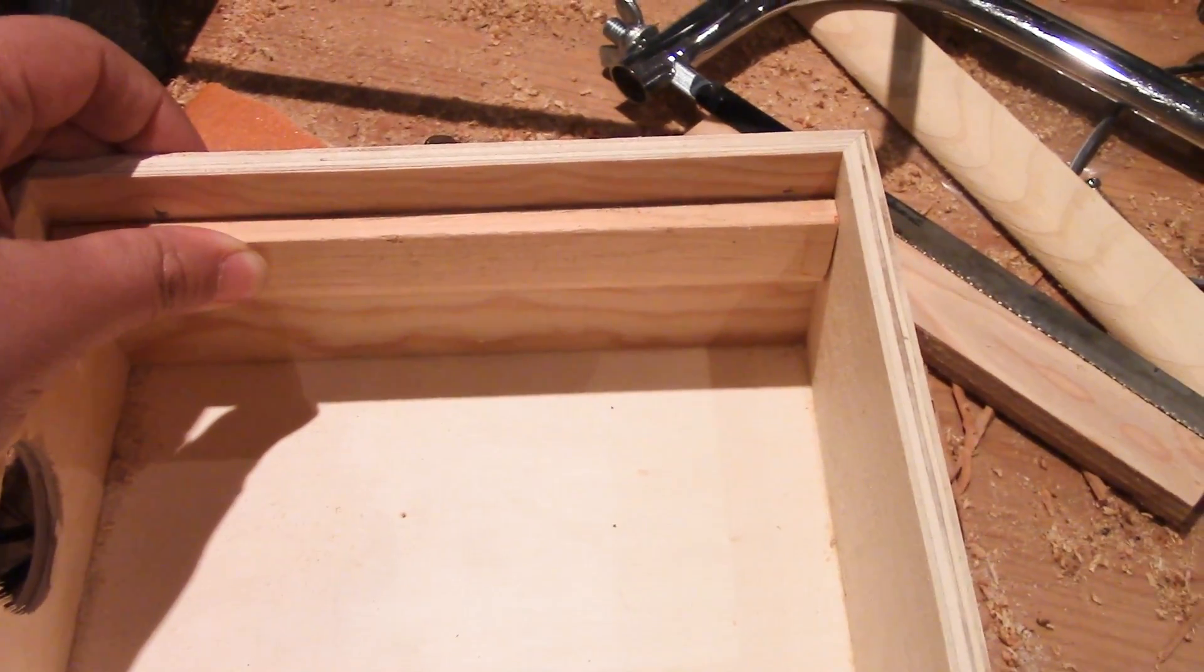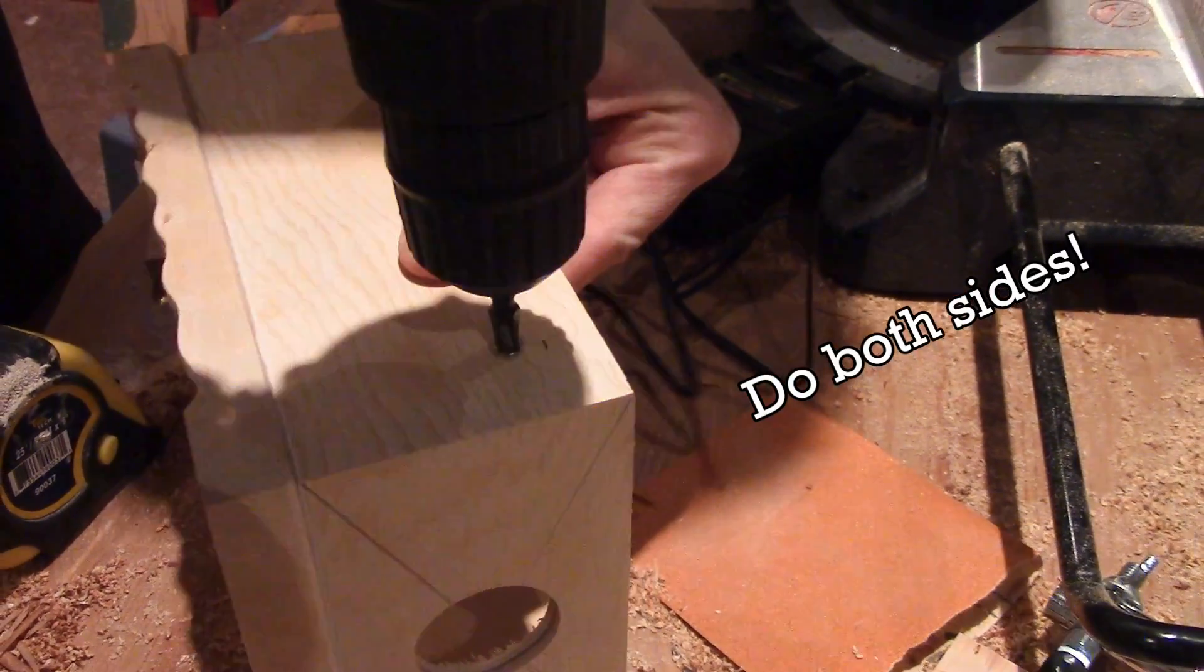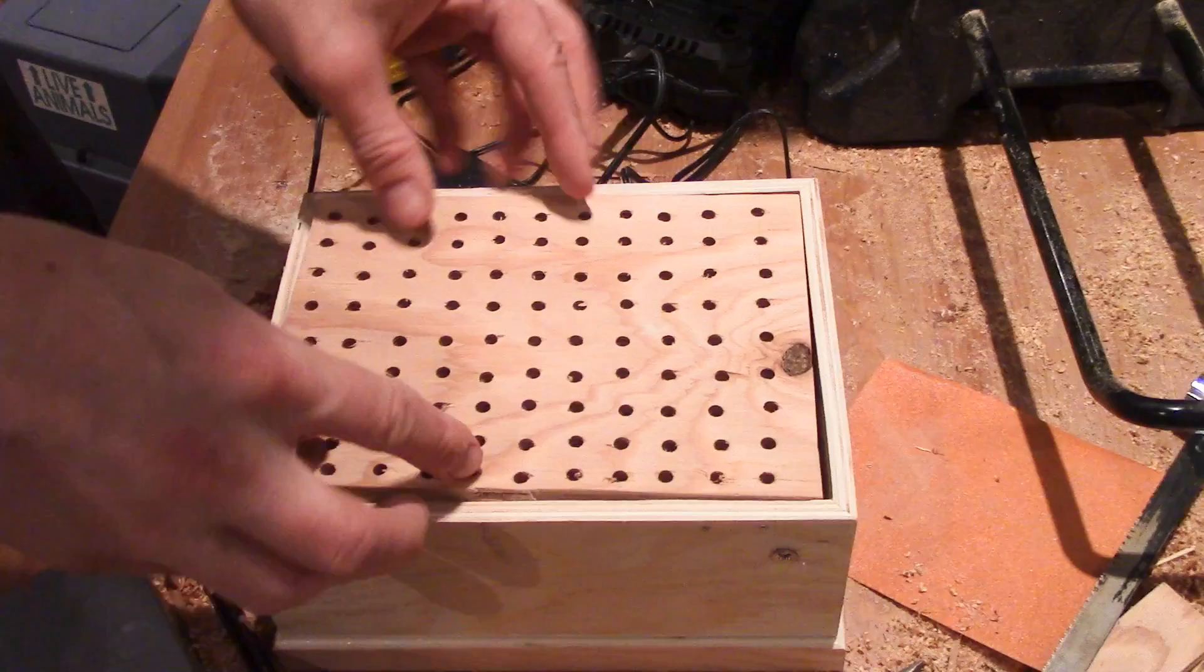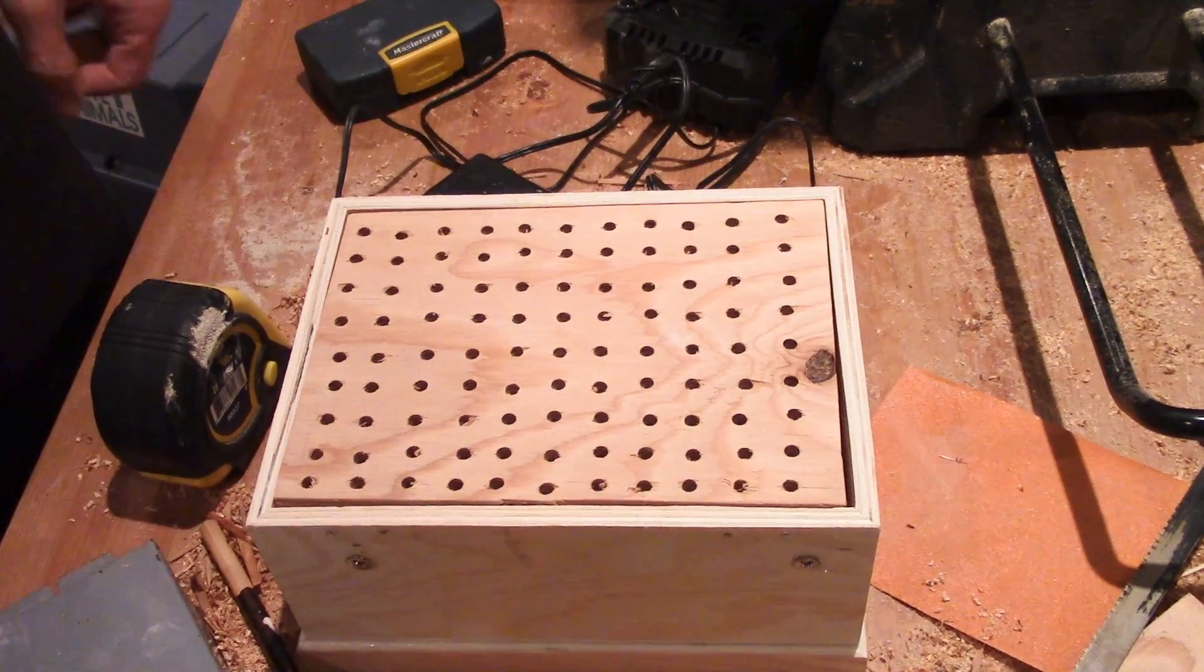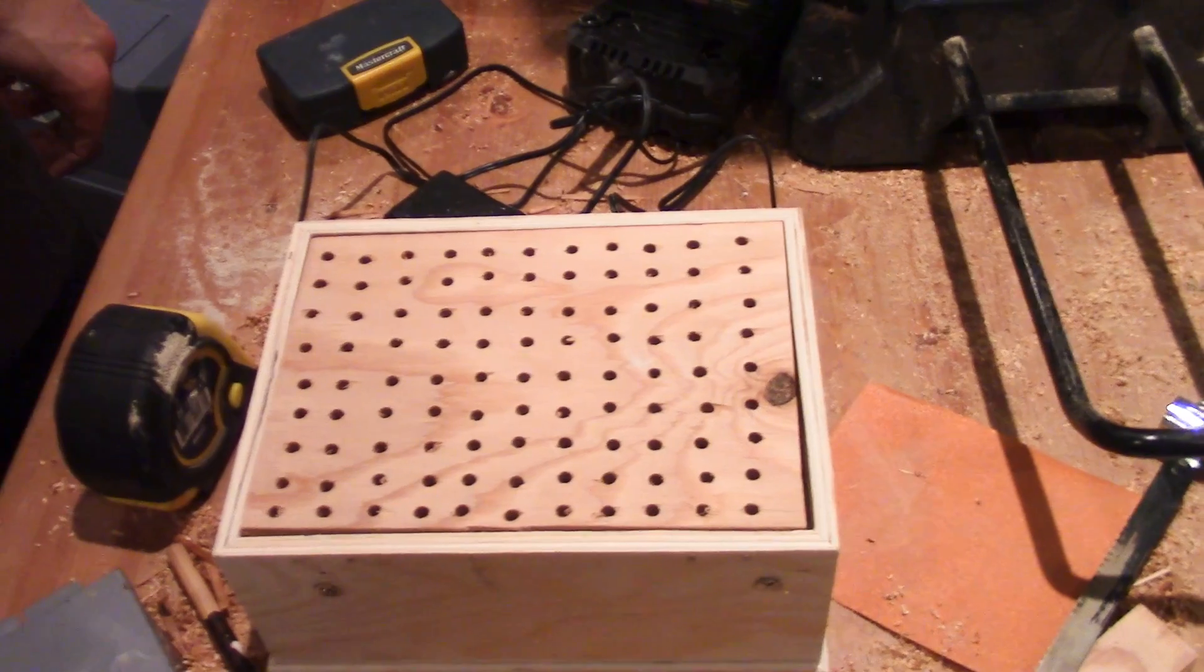Once you have that, you're going to screw the two pieces of long wood on each length of the inside of the box. That way your board is resting on them. That's all for the vacuum former. It was quite easy, wasn't it?